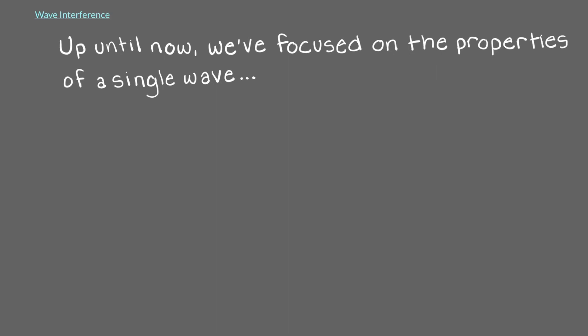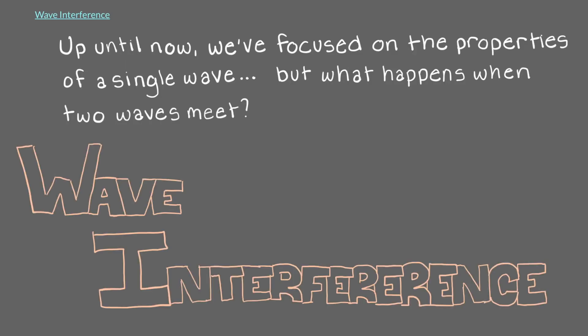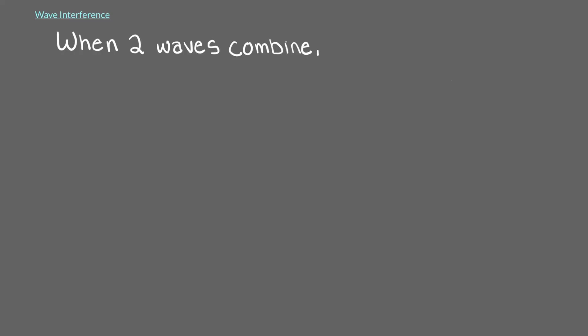Up until now, we've focused on the properties of a single wave. But what happens when two waves meet? They interfere with each other, meaning they combine. When two waves combine, the result depends on whether they are in phase or out of phase.